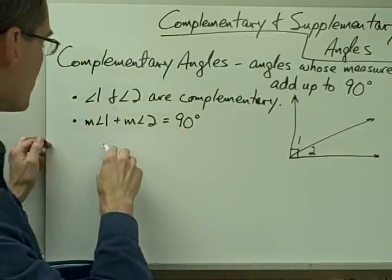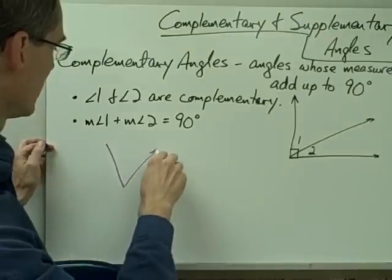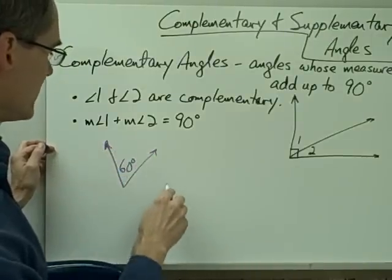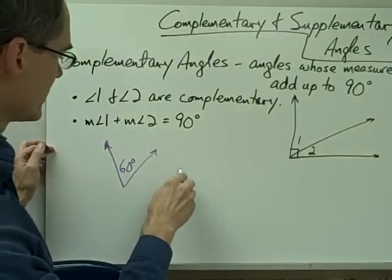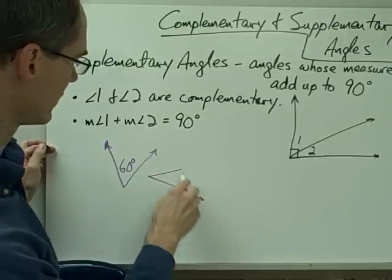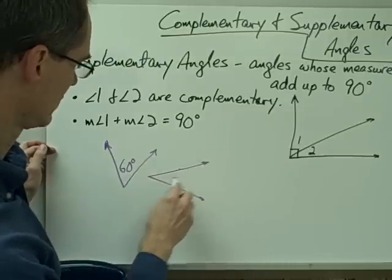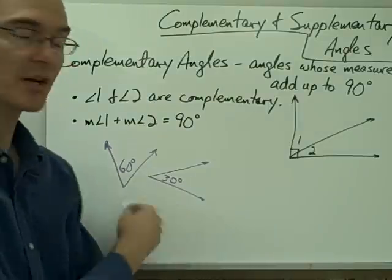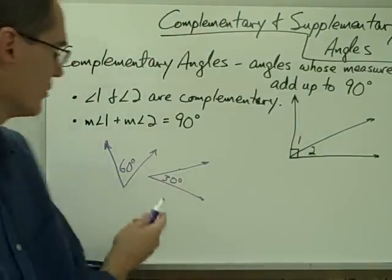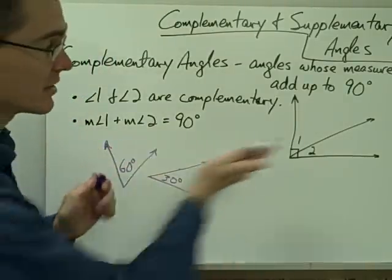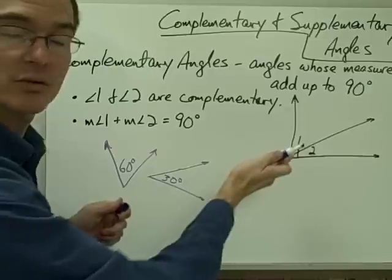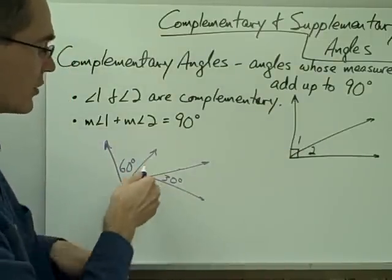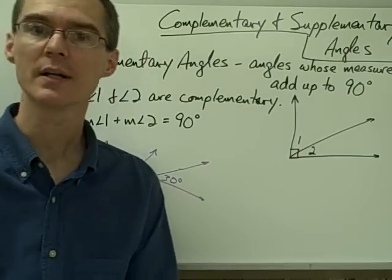I could also draw a picture like this: one angle that's 60 degrees and another angle that is 30 degrees. This is also a pair of complementary angles, even though they are not adjacent the way the previous two angles are. Since their measures add up to 90 degrees, these two angles are complementary.